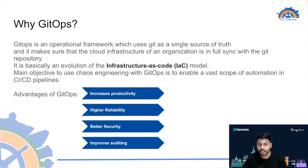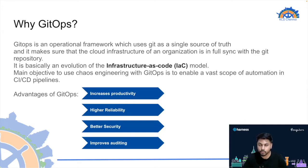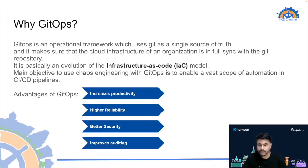Why do we need chaos engineering with GitOps? Chaos engineering with GitOps enables a vast scope of automation with CI/CD pipelines. Currently chaos engineering is performed in a closed environment or pre-production stage — but enabling it in the CI/CD stage lets developers know about faults before reaching pre-production. Advantages of GitOps include increased productivity, as developers focus more on development rather than CI/CD of infrastructure, and it reduces mean time to deployment. Higher reliability — GitOps is considered a best practice because it reduces mean time to recovery; if there's a fault, you can simply roll back to a previous stable version.